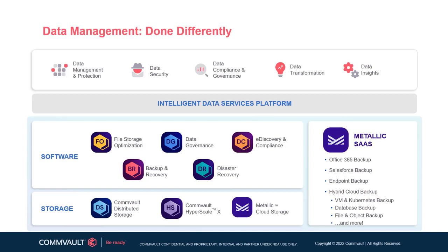Our storage offerings include our flagship Hyperscale X integrated appliance that protects hybrid cloud workloads and works with both our software and SaaS offerings. Commvault Distributed Storage, our cloud-native software-defined scale-out storage solution, helps accelerate modern containerized applications. Our metallic cloud storage service delivers secure and scalable cloud storage for all your backups. Finally, our metallic SaaS offerings provide flexible and simple cloud-delivered data protection, including protection for SaaS applications such as Microsoft Office 365 and Salesforce, for endpoints, and even for hybrid cloud workloads on-prem or in the cloud, such as virtual machines, file systems, databases, and Kubernetes.